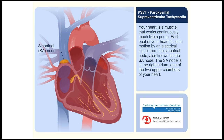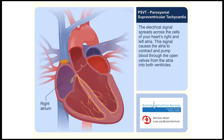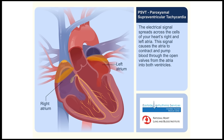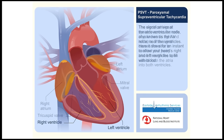The SA node is in the right atrium, one of the two upper chambers of your heart. The electrical signal spreads across the cells of your heart's right and left atria. This signal causes the atria to contract and pump blood through the open valves from the atria into both ventricles.